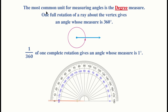The most common unit for measuring angles is the degree measure. One full rotation of a ray about the vertex gives an angle whose measure is 360 degrees. So half of that would be 180 degrees, as you can see on a protractor. One degree is just one 360th of one complete rotation. You can see the actual size of a degree on a protractor — it's extremely small, and many students overestimate the size of a degree.